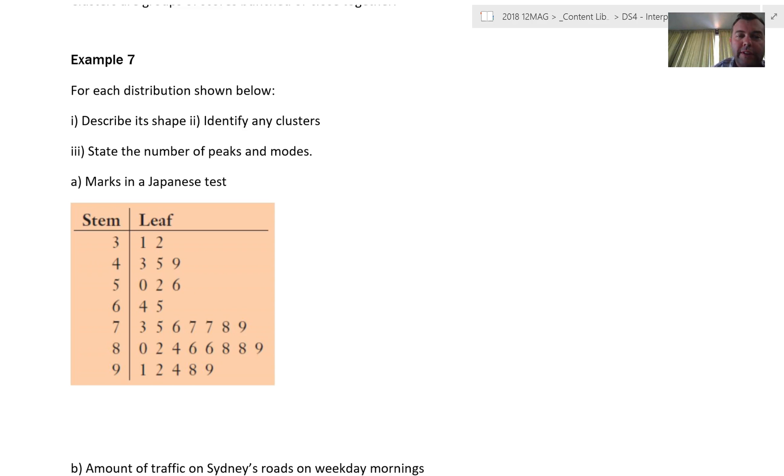We want to look at some data sets and describe their shape. We're going to describe that in terms of symmetrical or skewed, positively or negatively. Clusters are where we get more scores closer together. It's not a hard and fast rule about what's a cluster and what's not - no hard and fast rules here unless we artificially impose them. Number of peaks - a peak's going to be a bit like a cluster. And mode, remember the mode is the score with the highest frequency.